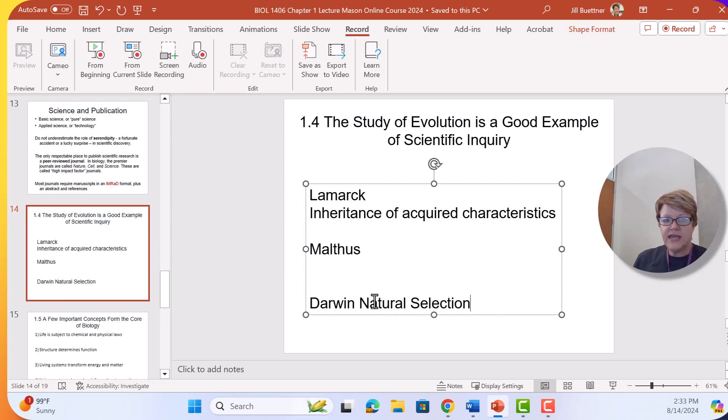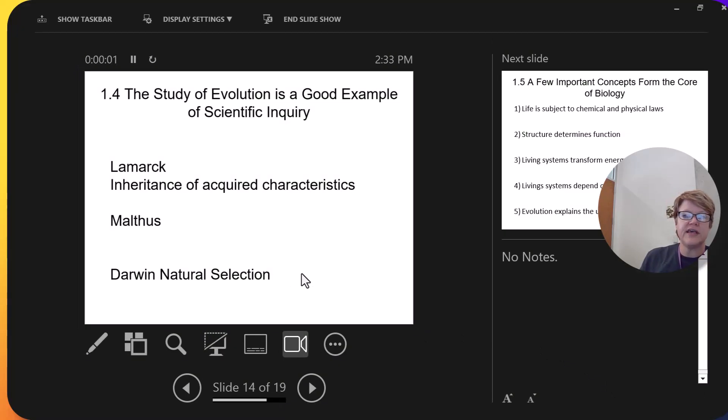And Darwin came up with a different concept of evolution, and he called it natural selection. So, he had an idea of evolution by natural selection.